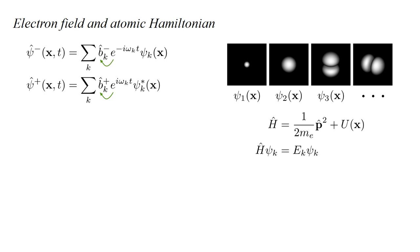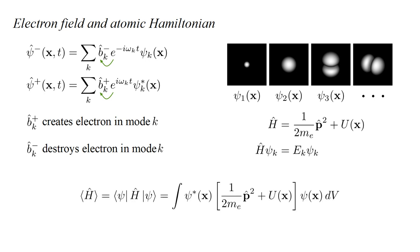The hydrogen atom Hamiltonian is one over two m_e p-squared plus u of x, where m_e is the electron mass, p is the momentum operator, and u is the potential energy due to the proton-electron electrostatic interaction. The stationary states satisfy h-hat psi_k equals e_k psi_k, where e_k is the stationary state energy h-bar omega_k, which reduces to just omega_k in our natural units. The operators b-hat k-plus and minus create and destroy, respectively, an electron in the mode k.